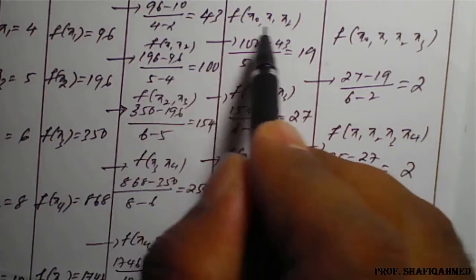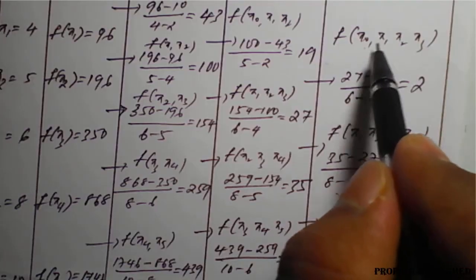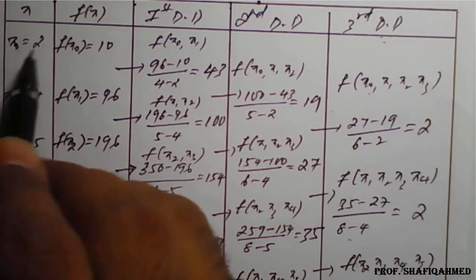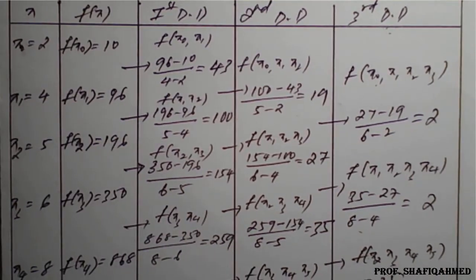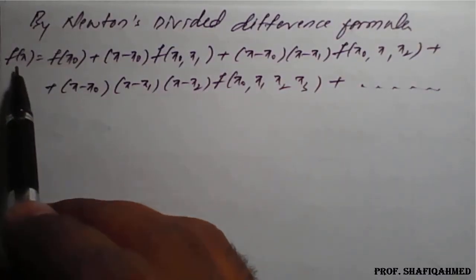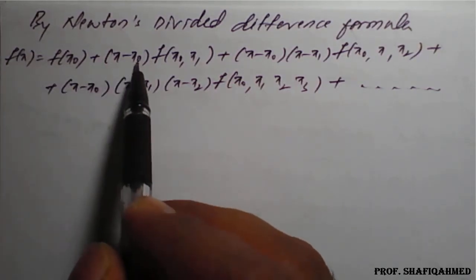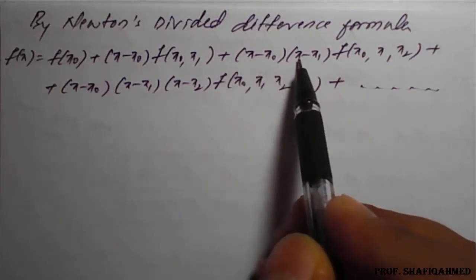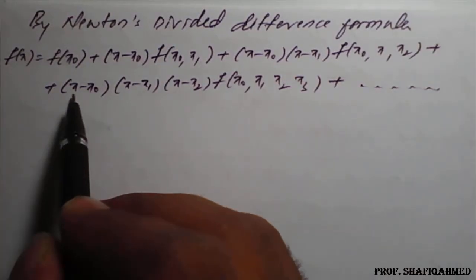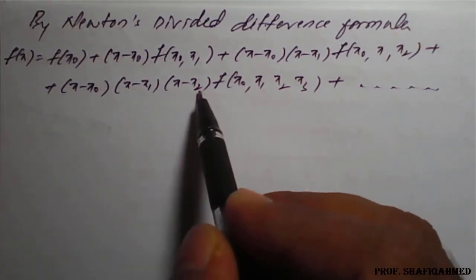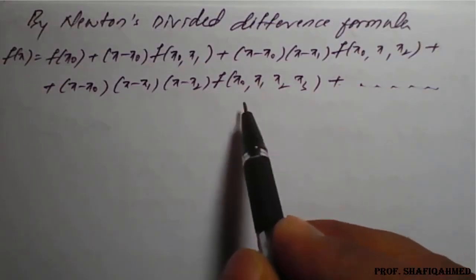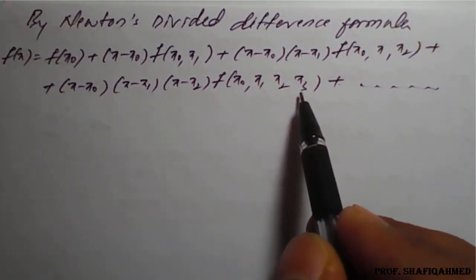We have to pick the values. f(x₀, x₁) is 43, f(x₀, x₁, x₂) is 19, f(x₀, x₁, x₂, x₃) will be 2, and f(x₀) is 10. x₀ value is 2. So with the help of this, we will write a formula and enter these values now. Let us see the formula. The formula is: f(x) = f(x₀) + (x − x₀)·f(x₀,x₁) + (x − x₀)(x − x₁)·f(x₀,x₁,x₂) + (x − x₀)(x − x₁)(x − x₂)·f(x₀,x₁,x₂,x₃) + so on. We have the table up to the term f(x₀,x₁,x₂,x₃).